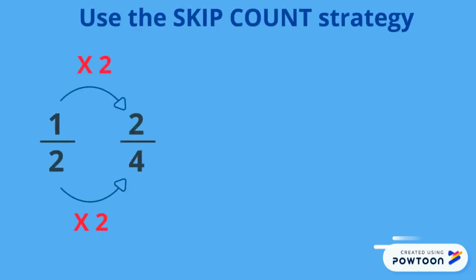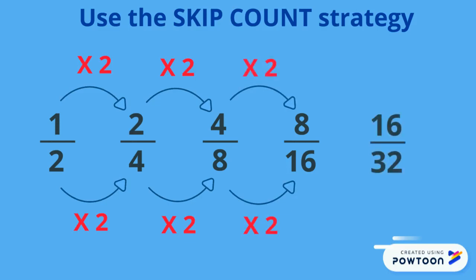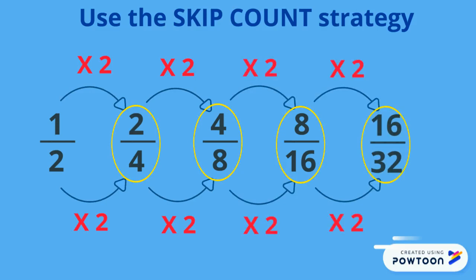Multiply the top and the bottom number by the same thing, and it will give you a fraction that is equal to the original. These circled fractions are all equal to one-half or equivalent.